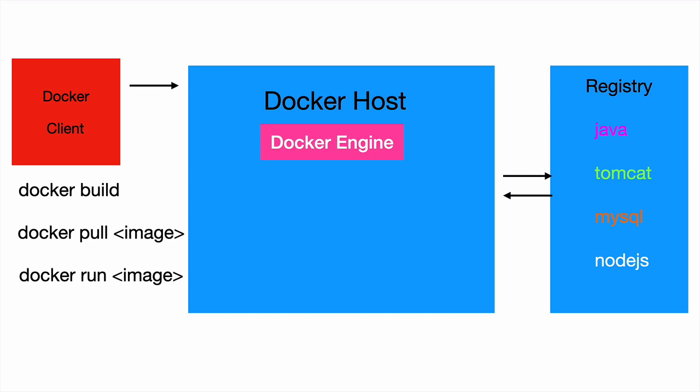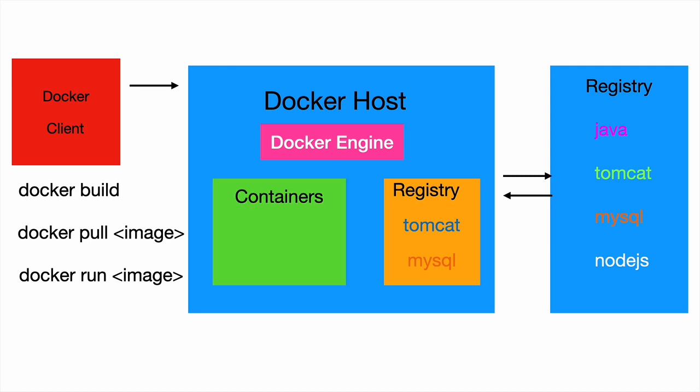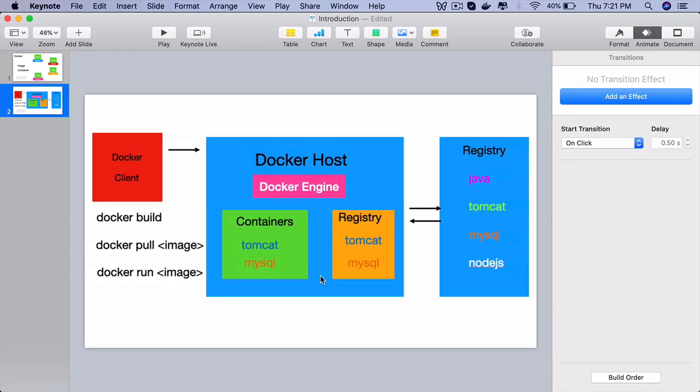For example, you can pull the MySQL image and launch a MySQL container on your machine in just a few commands. Once you pull an image, that image will be stored on your Docker host in a local registry. The first time you use an image from the central Docker registry, it will be stored locally as well. If that image is updated later in the registry, Docker will automatically pull that image again. Once you have an image, you can launch any number of containers — for example, a MySQL container and also a Tomcat container on which you run your application. These are some important components in Docker.